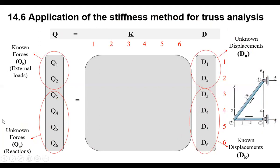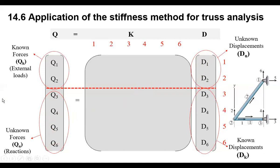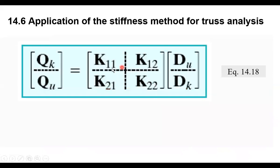In these matrices, the first step is to find D1 and D2, the unknown displacements. Once we find D1 and D2, we will be able to find Q3, Q4, Q5, and Q6. To make this easier, we are going to subdivide the matrix after the unknown displacements — in both the horizontal and vertical directions. We call the submatrices K11, K12, K21, and K22.